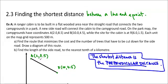This is my road, my straight road through the campgrounds. The campgrounds have coordinate A(2, 8.5) and B(10, 4.5), while the site for the cabin is at R(6, 1.5). So I want a new side road to connect the cabin to the campground. My R is going to be somewhere like here. Each unit on the map grid represents 500 meters. Find the route that minimizes the cost and number of trees that have to be cut down for the side road.